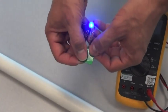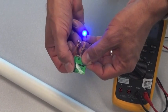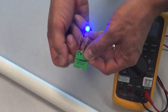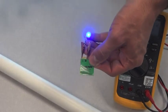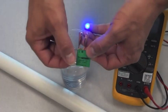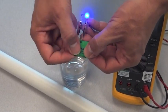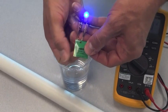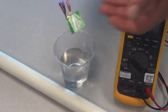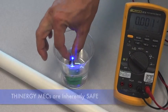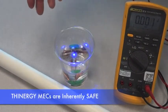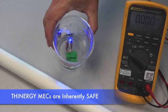Another thing that we can also demonstrate with the MEC is its safety. So if I take, for example, a glass of water, normally if you had a lithium battery, you would never think of putting it into an aqueous environment, because of course lithium can react very violently with water. But in the case of the MEC, it's very safe. So I can just drop it into the glass of water here, and you see that it continues to operate with no problems.